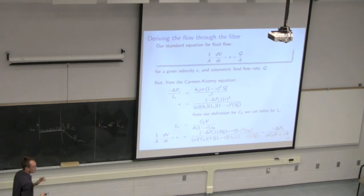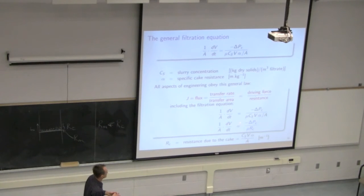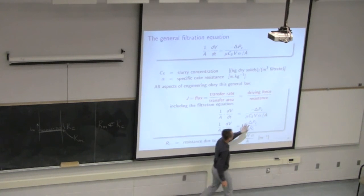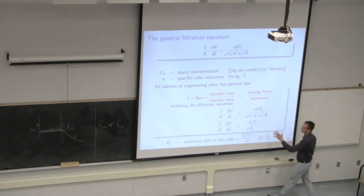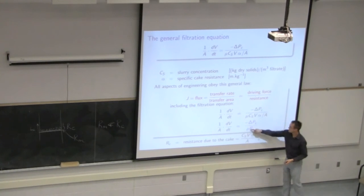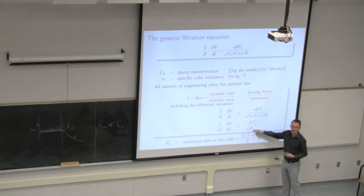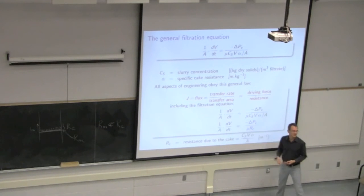What we're focusing on today is the derived filtration equation where flux is proportional to the applied pressure. A greater driving force gives greater flux — trivial and expected. Increasing the pressure difference over the system gives a greater flow. Decreasing the resistance RC by whatever means gives greater flow. Lowering the viscosity of the fluid also increases flow. Intuitively that equation is fairly straightforward.